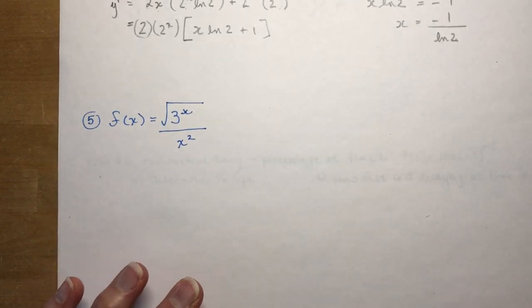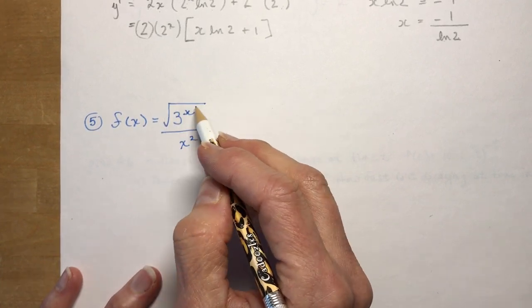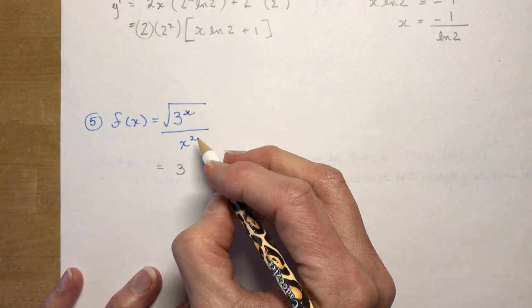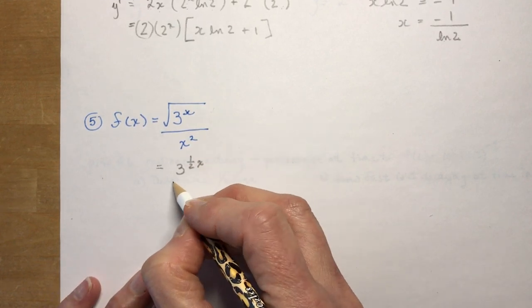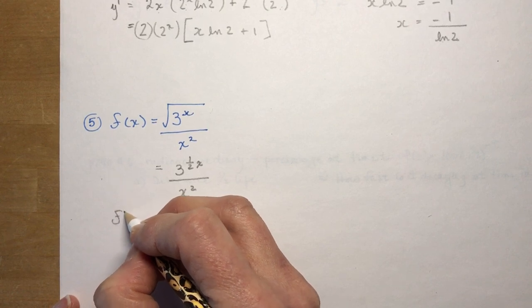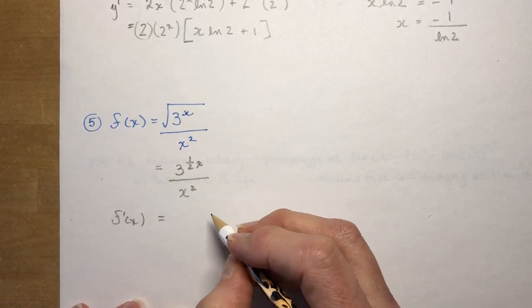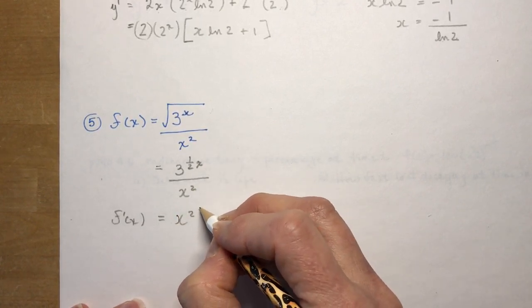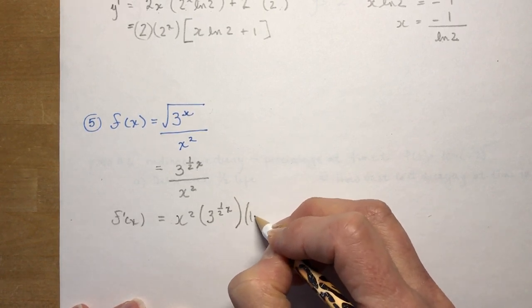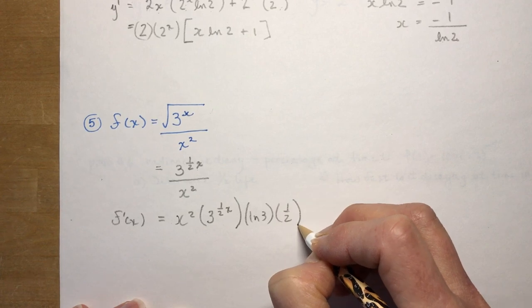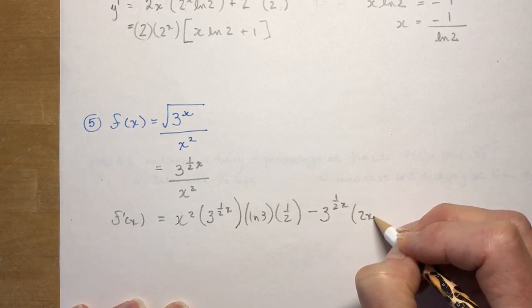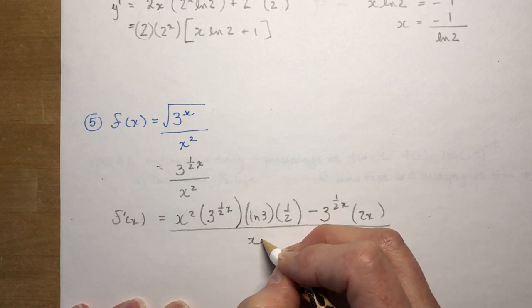Question number 5 for an example. We have something a little different in that we have the radical or the square root of 3 to the x. And I would rewrite that as 3 to the, remember this is x, and then to the half power. So it's to the 1 half x. So that makes it much easier for you to take the derivative. So maybe you might want to stop and try that one, but I'm going to keep going because I know you can pause. But I've got to keep on rolling here. So I'm going to use quotient rule. So I'm going to do ho d-hi. So the derivative of this is, write it out, 3 to the 1 half x ln 3 times 1 half. And I'm going to subtract high, which is 3 to the 1 half x, d-ho, which is 2x, all over the derivative, the denominator squared, which is x to the 4th.